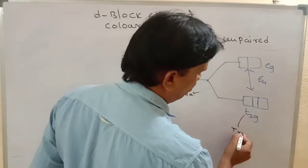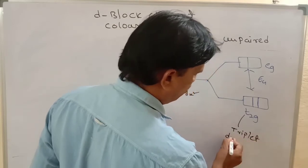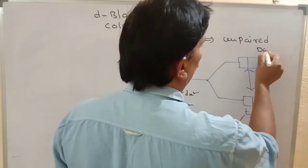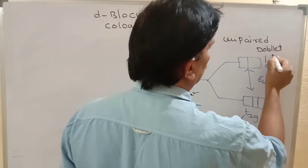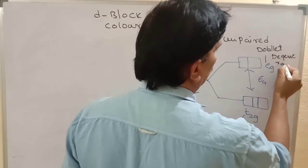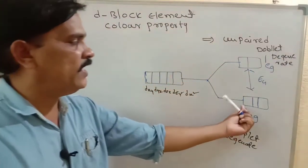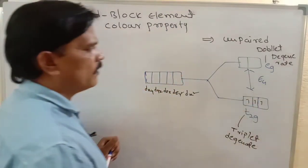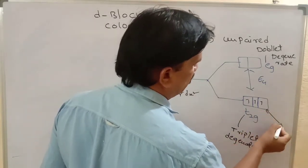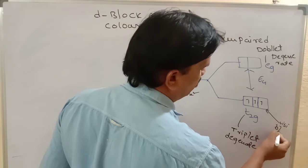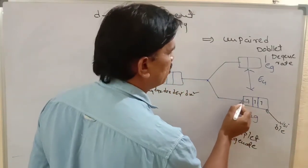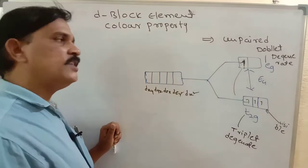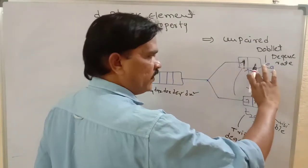T2G means triplet degenerate orbitals, containing Dxy, Dyz, and Dzx. EG means doublet degenerate orbitals. For example, if T2G has 3 unpaired electrons, those electrons can absorb visible light. The energy gap between T2G and EG is very small, so electrons can jump from T2G to EG orbital.